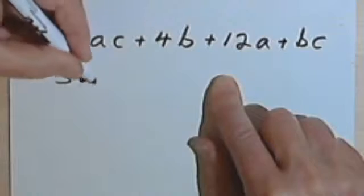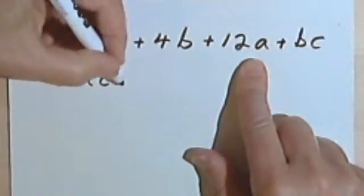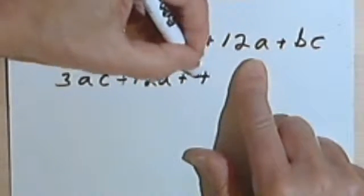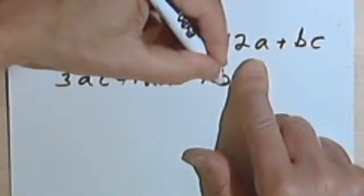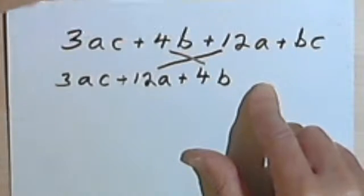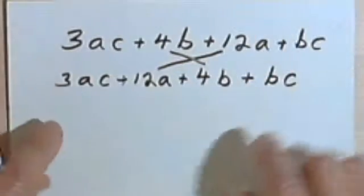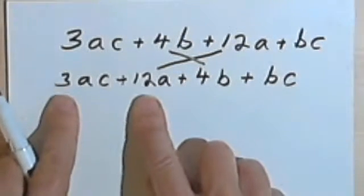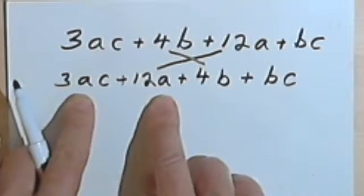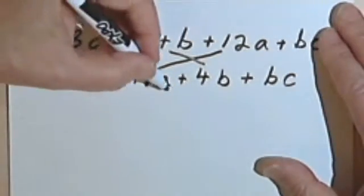So let's try this. Let's take the 3ac and now swap these two terms in the middle. Plus 12a plus 4b. In other words, all I've done is commute this 12a over to here and the 4b over to here. Plus bc. And now when I look at it, I realize I've got a 3 and a 12, and I can factor 3 out of them. And I've got an a and an a, so I can factor an a out. Over here I've got 2 b's, so they'll factor out. So this will factor after all.